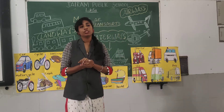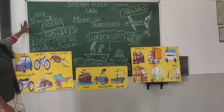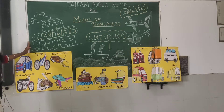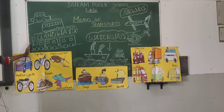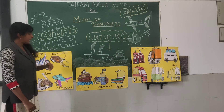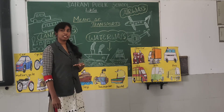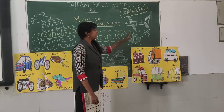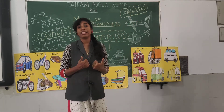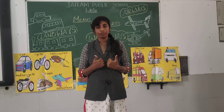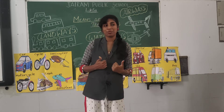In landways, we have roadways and railways. We travel through road and we travel through railways. And in waterways, we travel through sea and rivers. And in airways, we travel through aeroplanes and helicopters. Shall we see the vehicles in which we transport through?